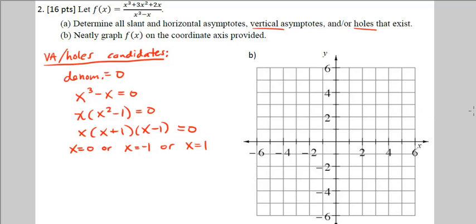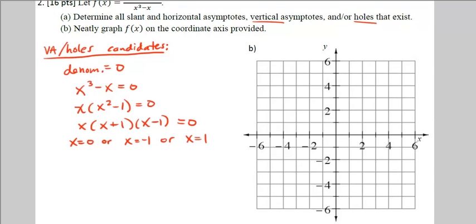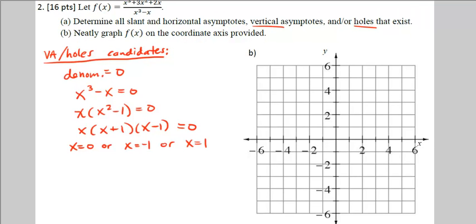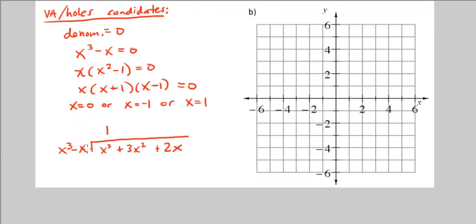So then how do we go on and decide which one is it? That's when we actually do polynomial division. If I have x cubed minus x, and we're dividing x cubed plus 3x squared plus 2x by this, x cubed goes into x cubed one time. So then we go ahead and multiply it out. That's just x cubed minus x. Subtract that.